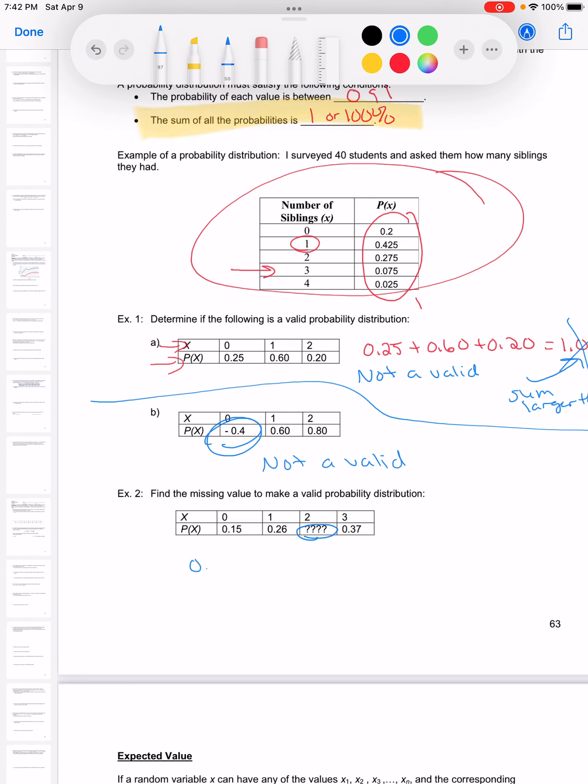So I know that if I take all of these probabilities, and I'm just going to call that missing one question mark—you could also call it x if you wanted to—they have to equal 1.